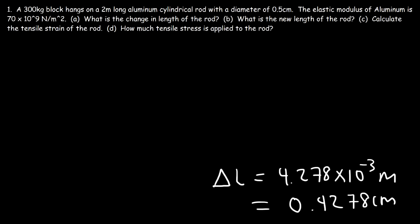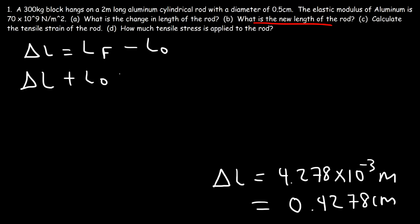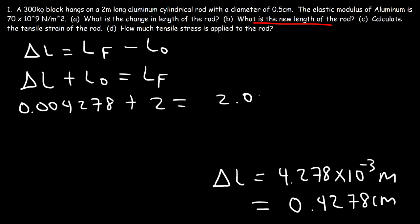So what about part B? What is the new length of the rod? The change in length is the final length minus the initial length, so the new length is going to be the change in length plus the original length. That's 0.004278 plus the original 2 meters, so the new length is about 2.004278 meters. It really didn't change much — it stretched a little.